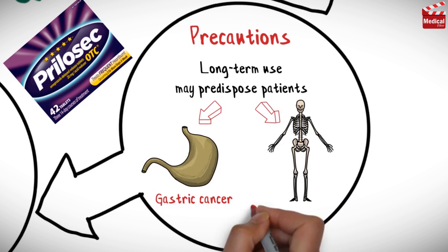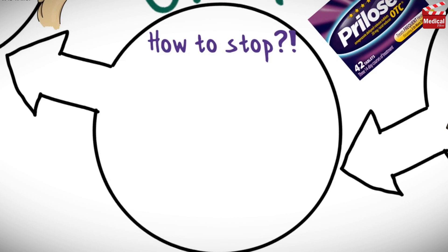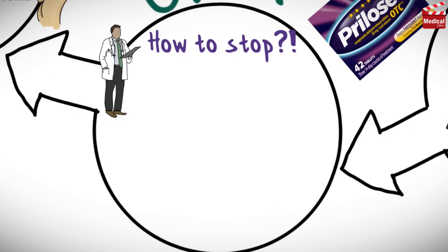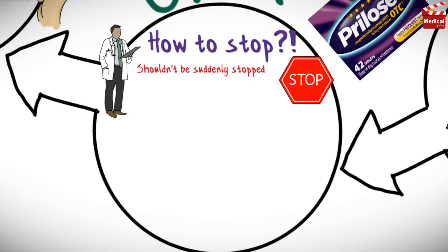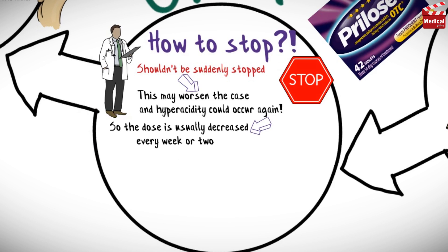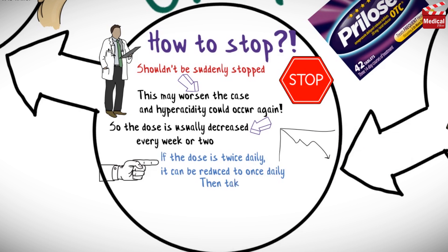When you want to stop taking omeprazole, contact your healthcare provider. It shouldn't be suddenly stopped, as this may worsen the condition and hyperacidity could occur again. The dose is usually decreased every one to two weeks — for example, if the dose is twice daily, it can be reduced to once daily, then taken every other day.